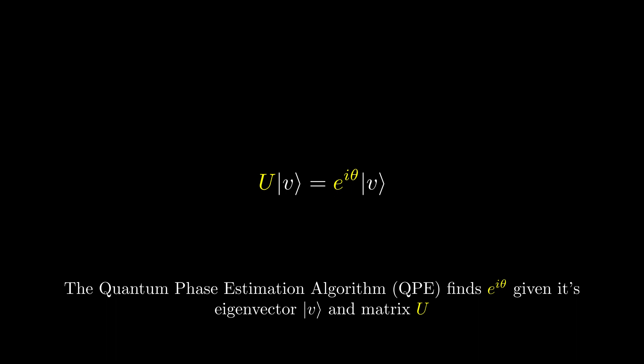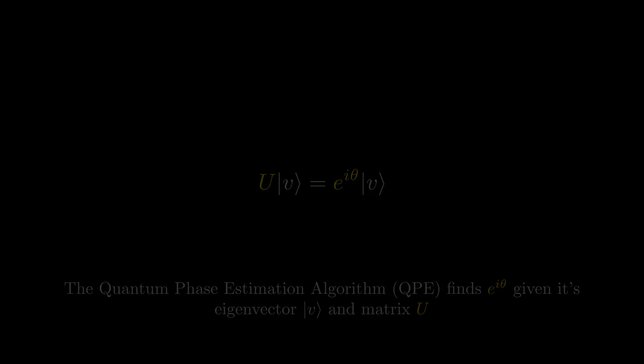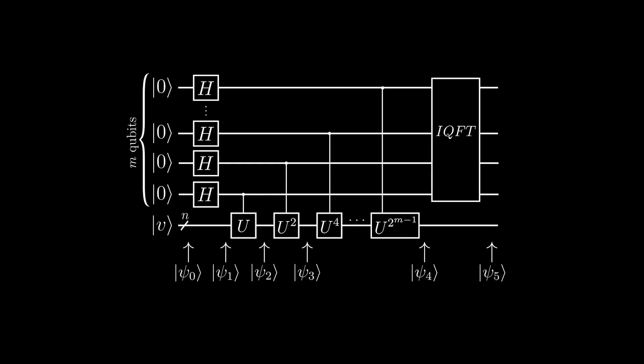Here is the quantum phase estimation circuit. As you can see, we have two registers. The first one contains m zeros and is used to store the estimated phase. The second one, V, is n qubits and is the eigenvector of the gate we are trying to measure the eigenvalue of.